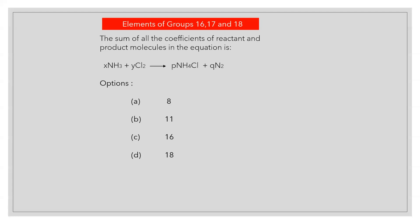The sum of all the coefficients of reactant and product molecules in the equation NH3 + Cl2 gives NH4Cl + N2. Answer D: 18.